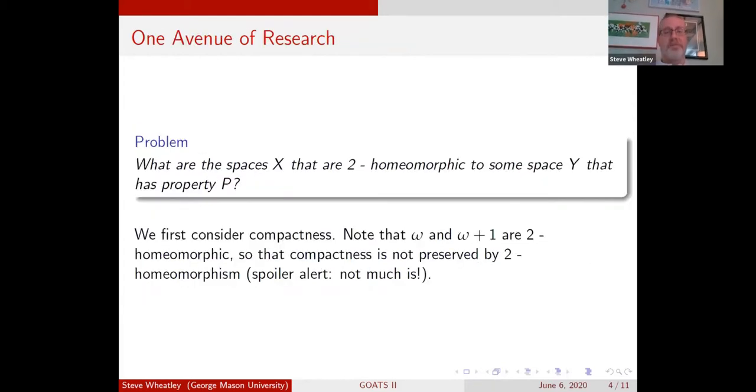One way I took this research was I asked this broad question: if you have some space Y with property P - compactness, connectedness, metrizable, whatever - how can we characterize the spaces that are 2-homeomorphic to that space? The first thing I'm going to talk about is the compact spaces, so compactness will be key here.